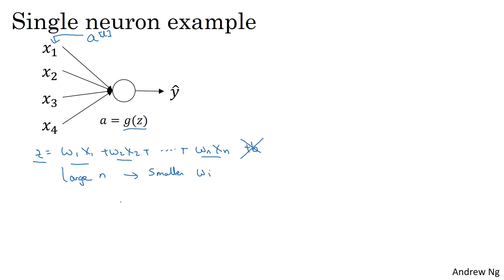One reasonable thing to do would be to set the variance of wi to be equal to 1 over n, where n is the number of input features that's going into a neuron.